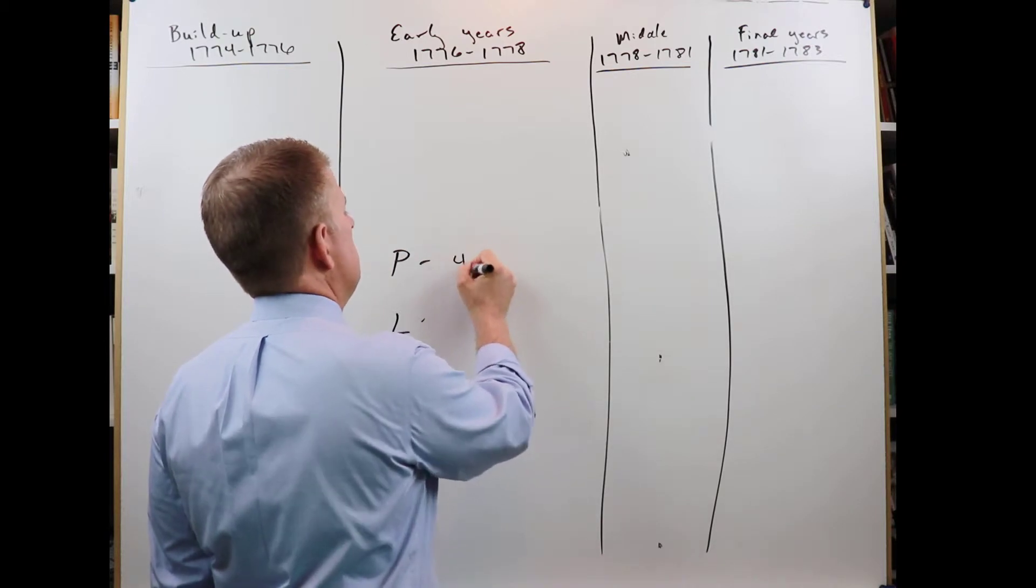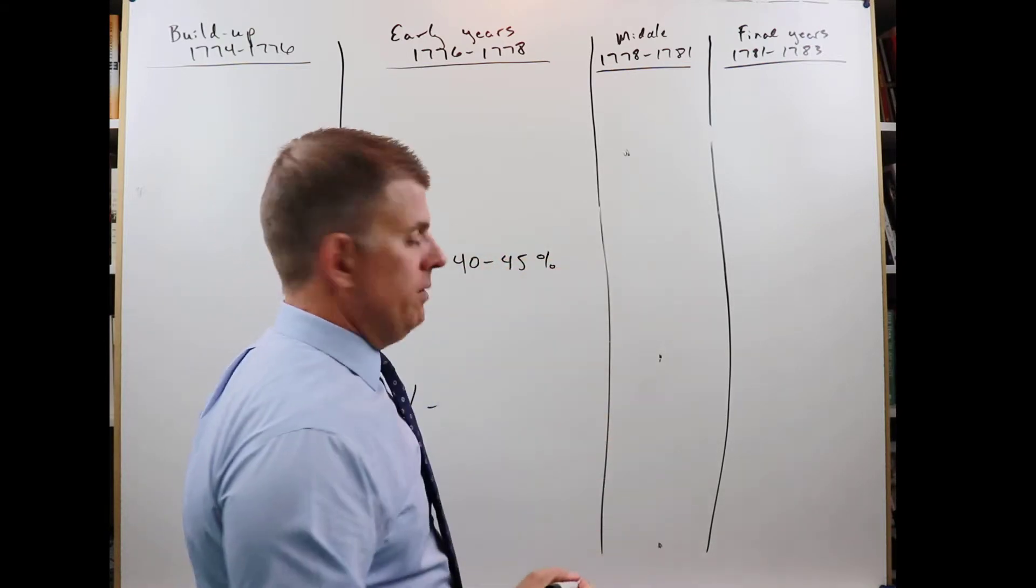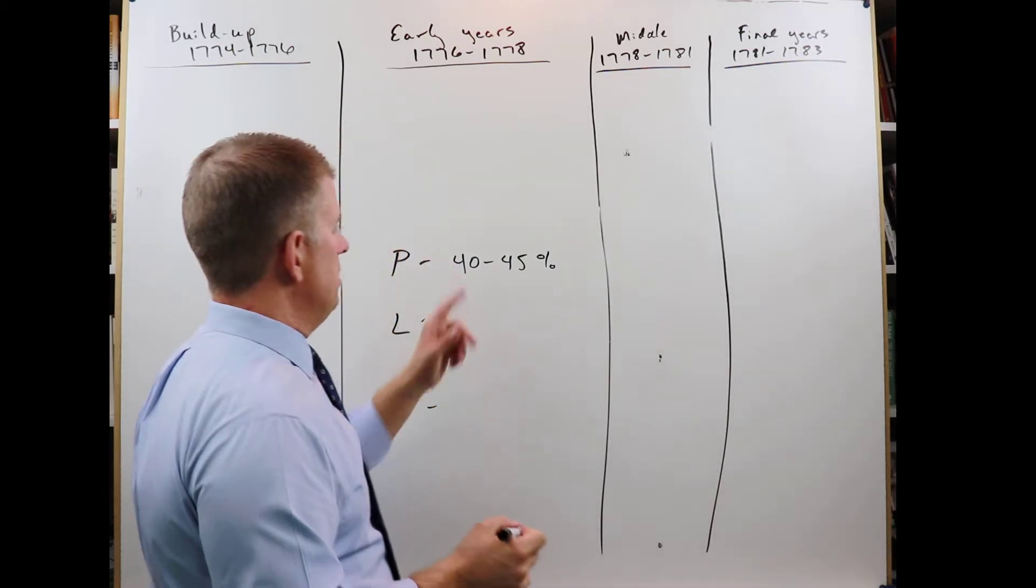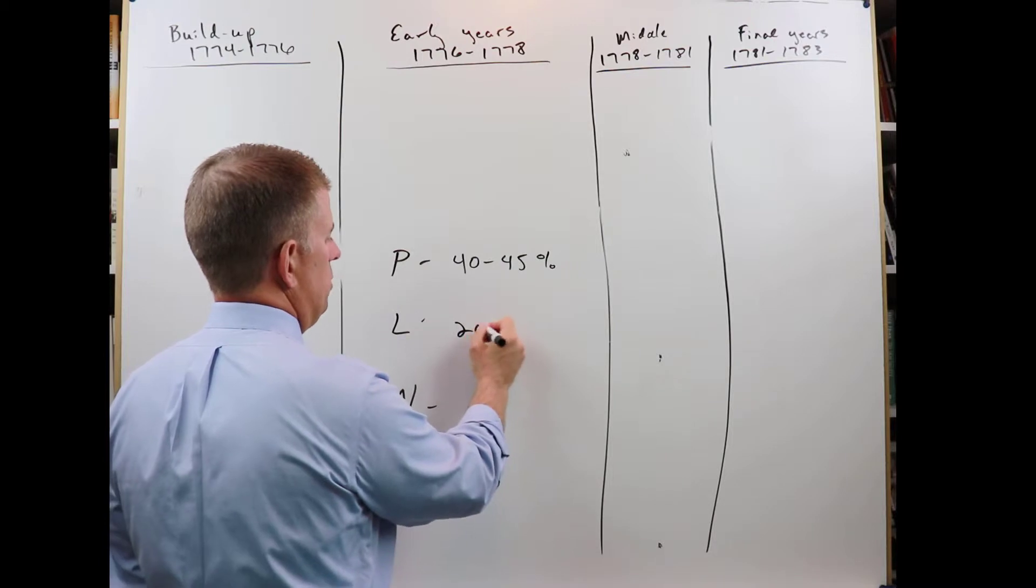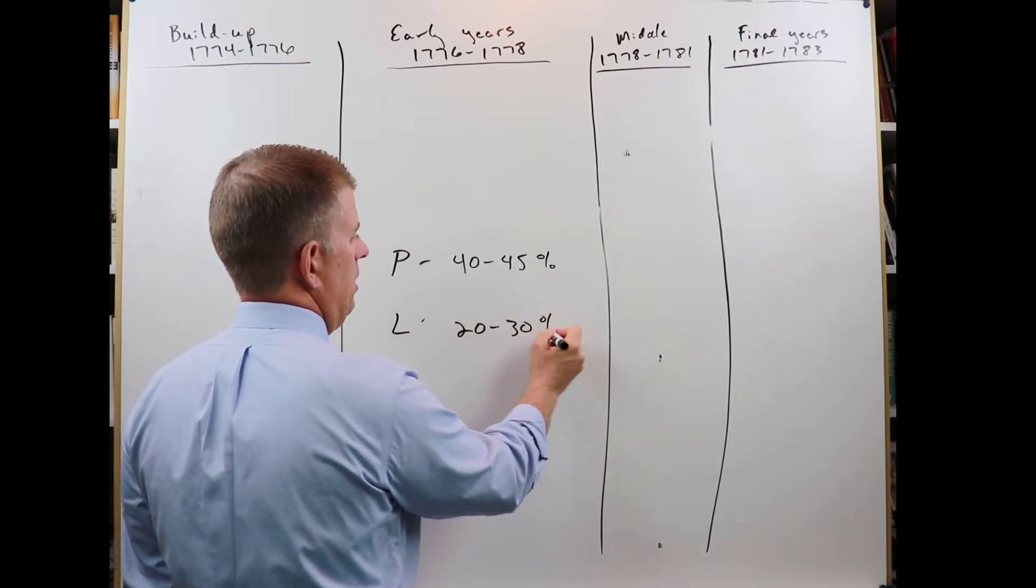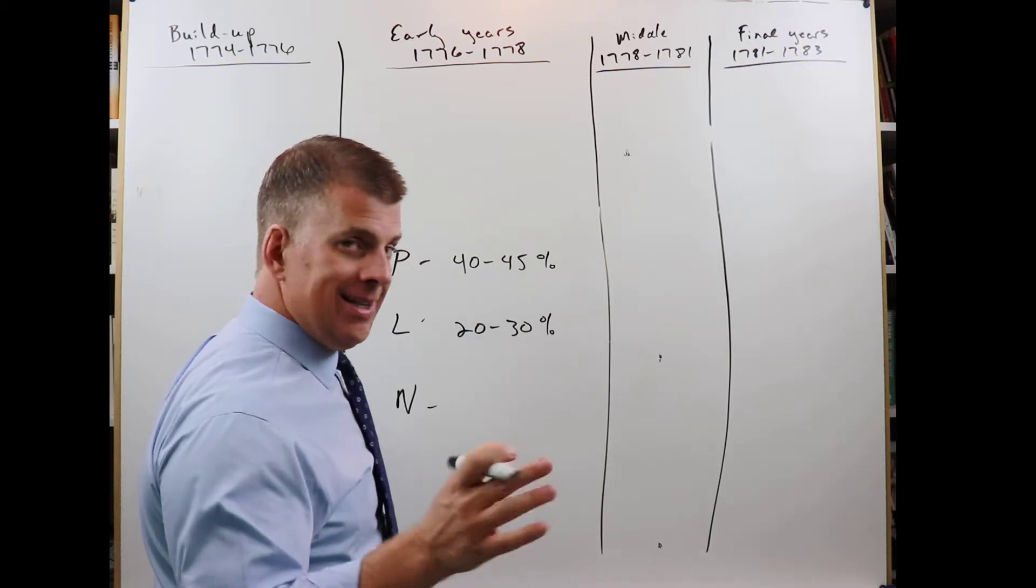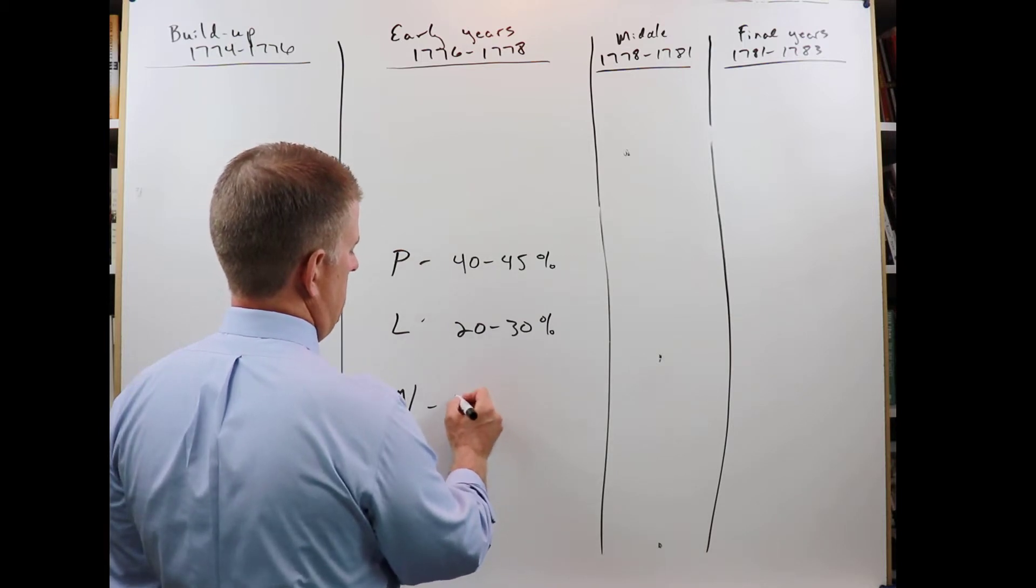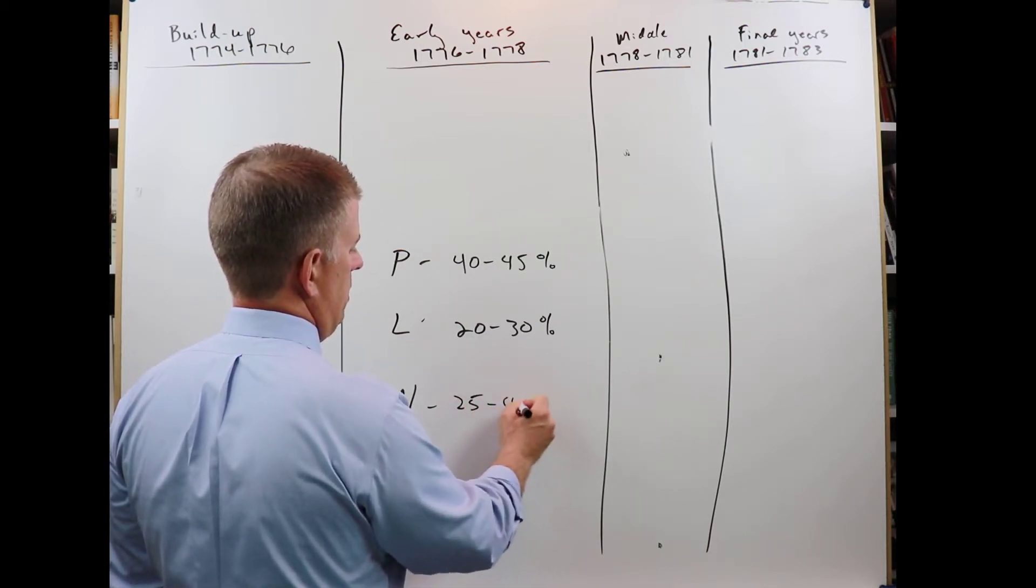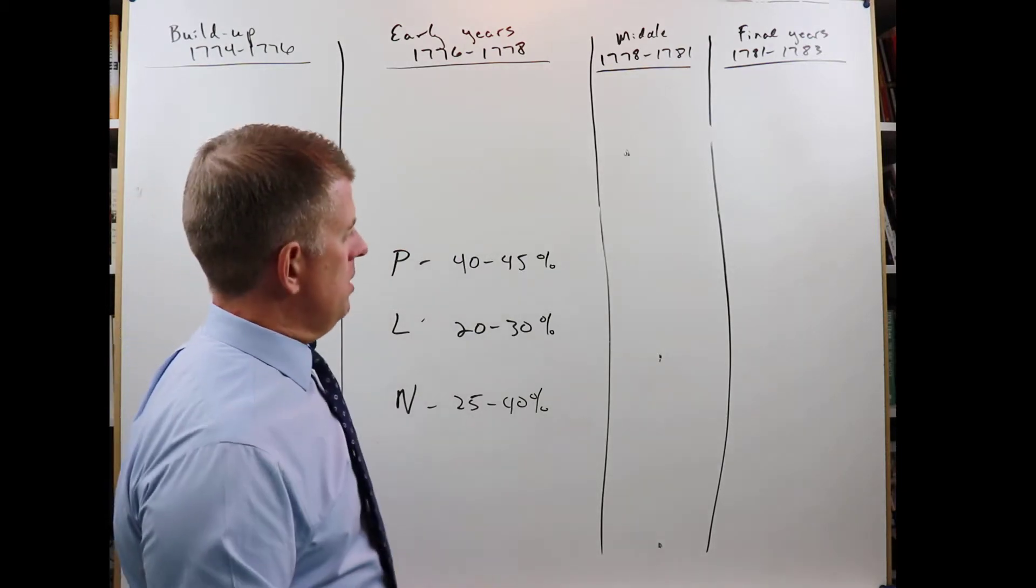So historians estimate about 40 to 45% of the population supported the Patriot cause. They also estimate that somewhere between 20% and 30% of colonists did not support the Patriot cause. They were loyal to England. And they estimate that between 25% and 40%, it's a pretty big range there, were neutral.